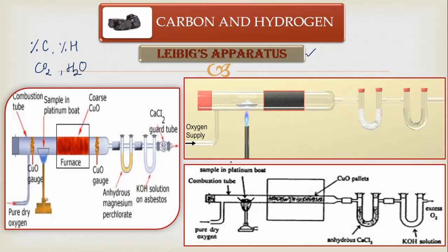I have used three pictures here to give you a clear glimpse of how Liebig's apparatus works. Basically it has a combustion tube — you can see the combustion tube present in all three versions. Then you have an oxygen supply, which you can see in all three as well. Ultimately, in the combustion tube you have to supply oxygen because combustion takes place in the presence of oxygen.